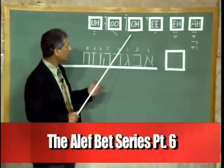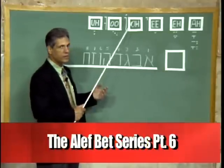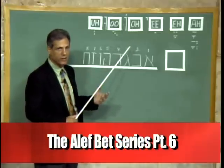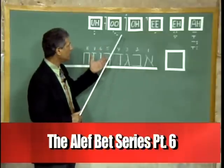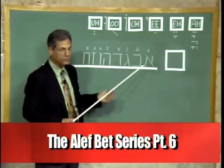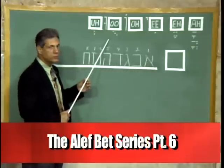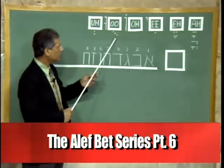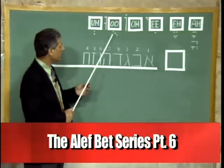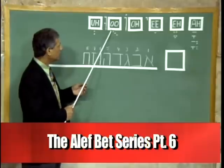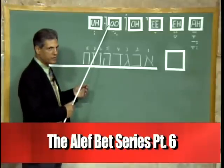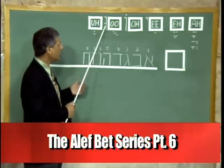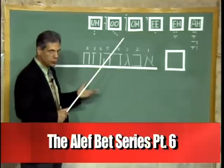The O sound is created by putting a dot on top of a letter, and sometimes you'll see the letter Vav — which is the sixth letter of the alphabet — next to a letter with a dot on top. That's an O sound. A U sound is accomplished by either three diagonal dots underneath a letter, or a letter and a Vav used as a helper. When you have a letter, a Vav, and a dot in the middle of the Vav, that's a U sound.